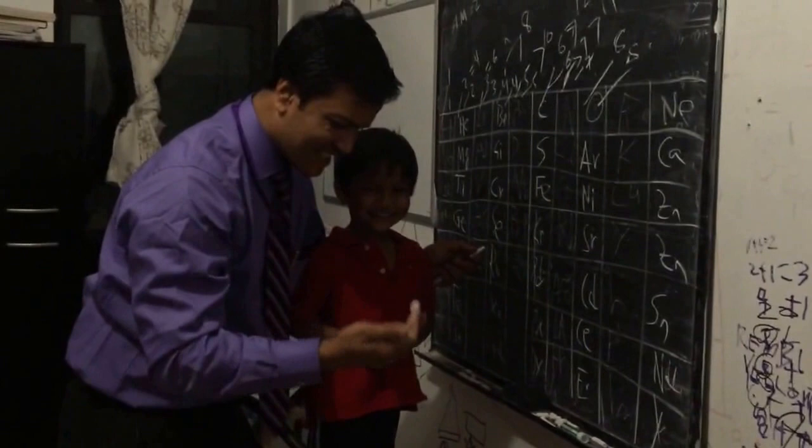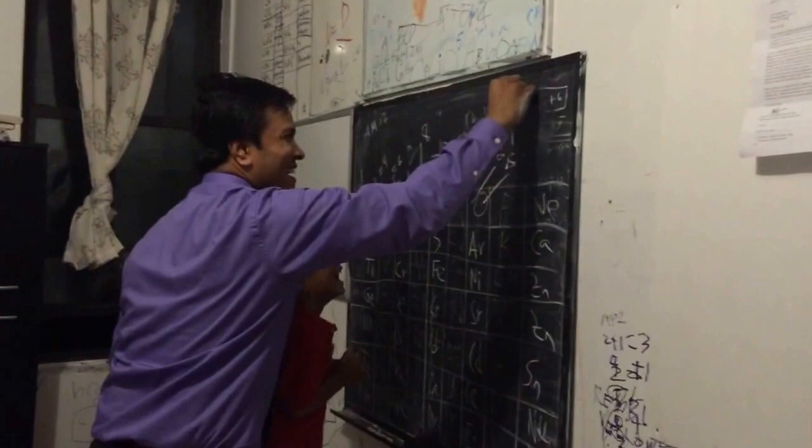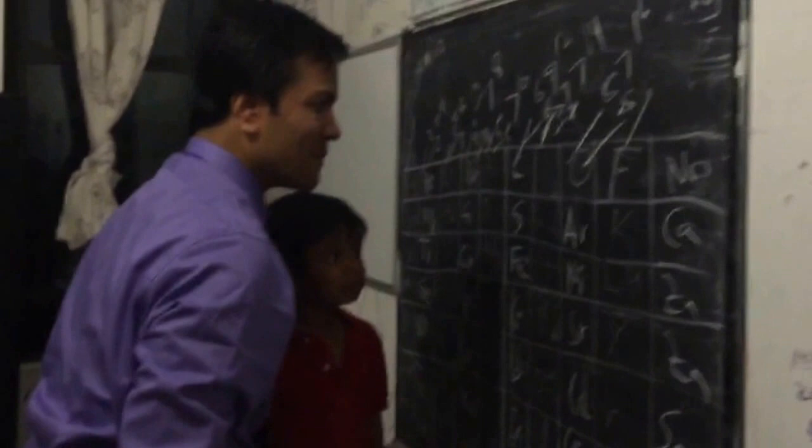This is the periodic table. Noble gas is stable. Halogens and alkali react to guys who flee. Each period will see new outer shell — full electrons are to the right.